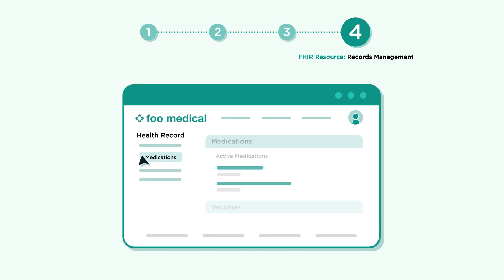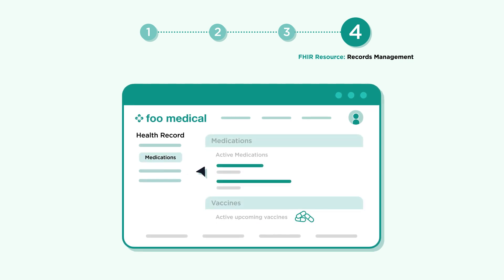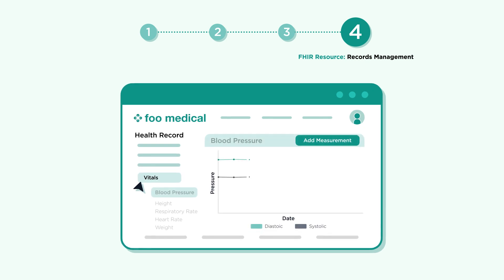Records management. Historical records can be viewed and edited, even by users in certain cases — for example, adding height and weight or insurance card information.